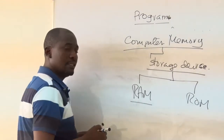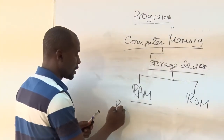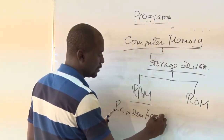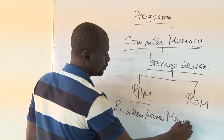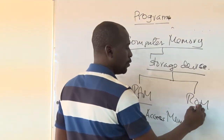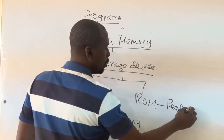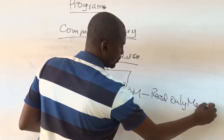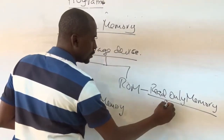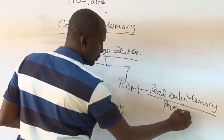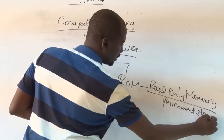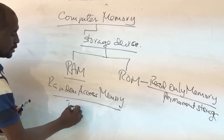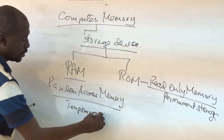The RAM is the Random Access Memory, while the ROM is the Read-Only Memory. In short, the ROM is a permanent storage, while the RAM is a temporary storage.